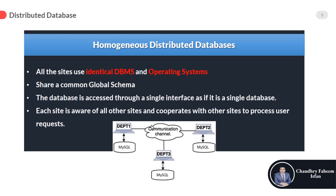The third point is that the database is accessed through a single interface as if it is a single database. The fourth point is that each site is aware of all other sites and cooperates with other sites to process user requests. Because of the same schema and identical DBMS, all sites cooperate with one another to accomplish user requests. This is all about homogeneous distributed databases.